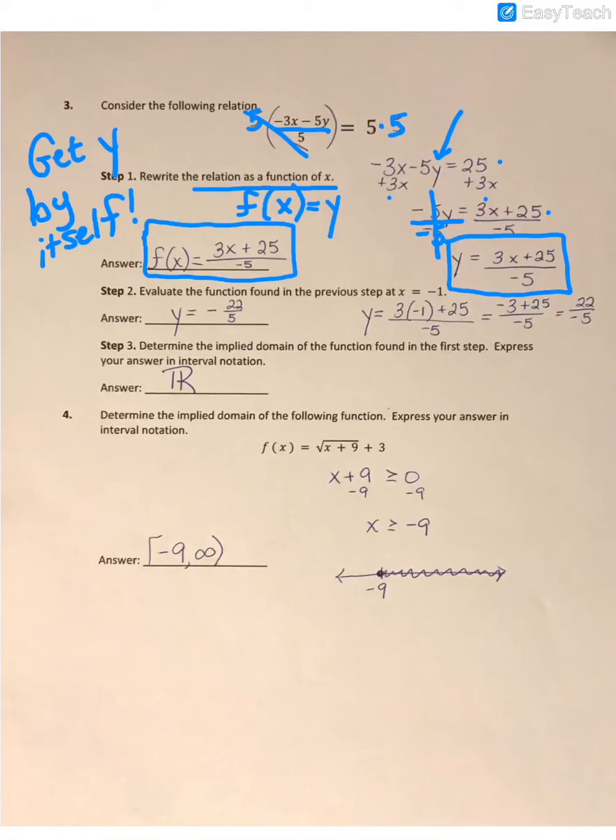Step 2 wants us to evaluate the function when x = -1. So that's just a matter of taking your function, plugging in -1 for your x, which is what I'm showing you here. So 3 times -1 gave me -3 plus the 25. I get 22 on top divided by the -5 on bottom. They just want you to leave that in fraction form. Don't change it to a decimal.